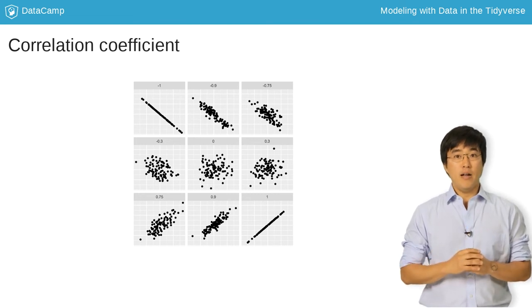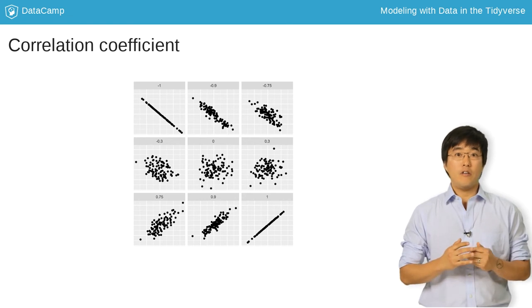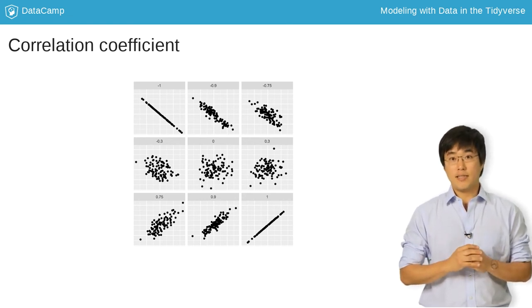In the top left plot, where the correlation is negative 1, the points fall perfectly on a negatively sloped line. So, as values of x increase, values of y decrease in lockstep.